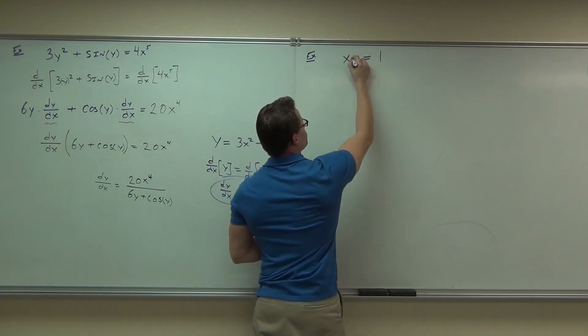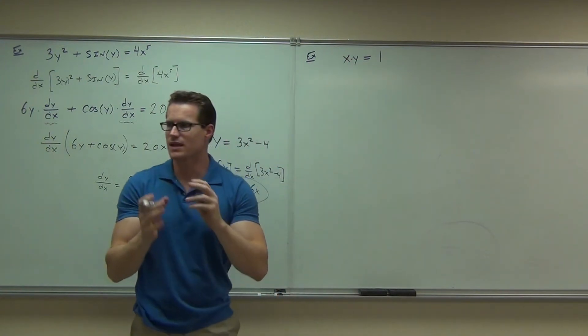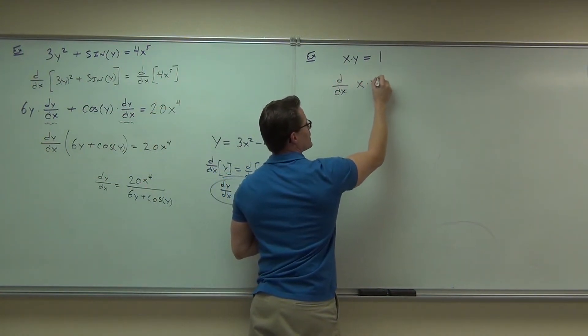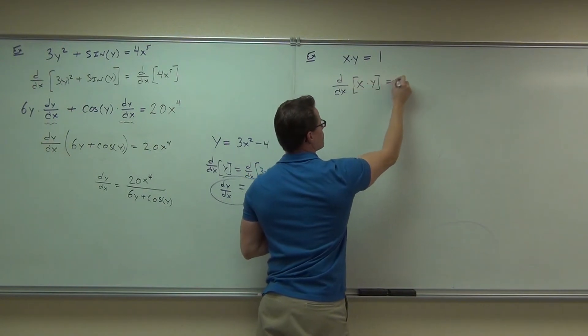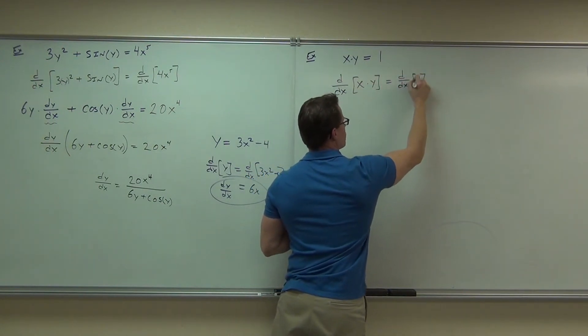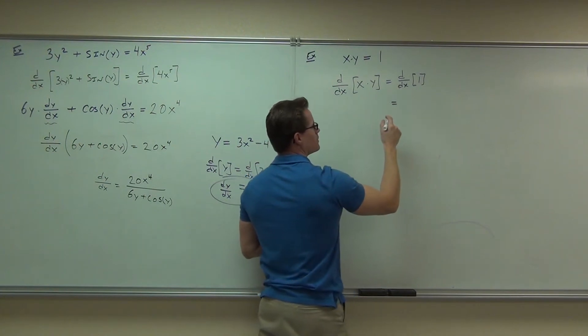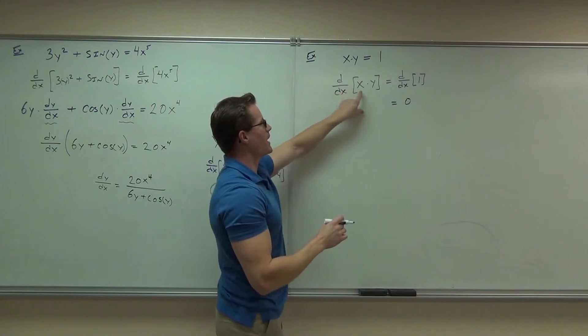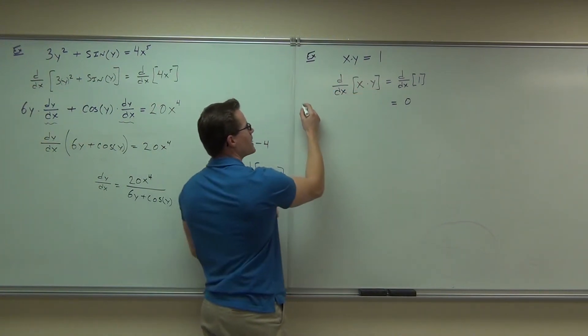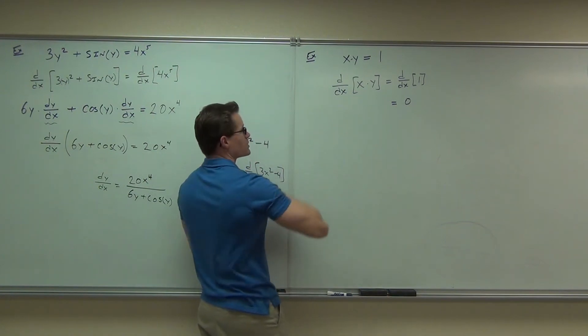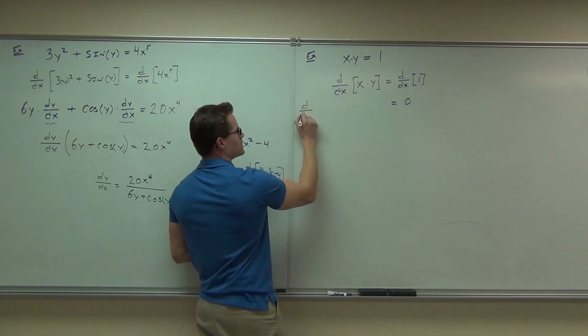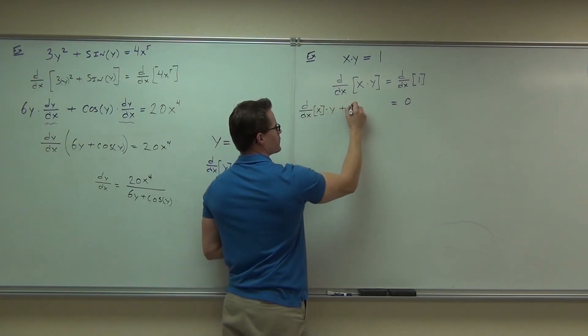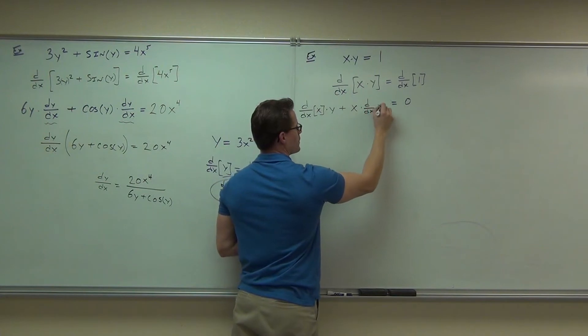So here, when you have the product rule, yeah, you've got to use it. That's a function of X times a function of X. So sure, we're going to take a derivative of both sides. And you let your d/dx kind of do the work for you. Just follow that down. d/dx of 1. What's d/dx of 1? Zero.